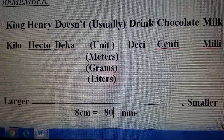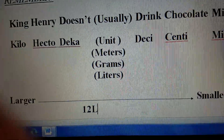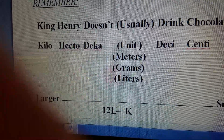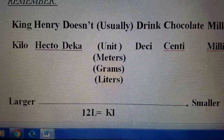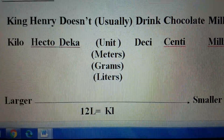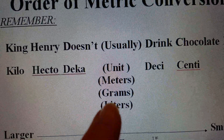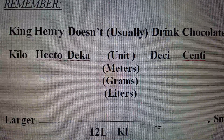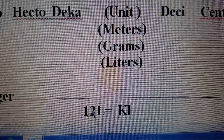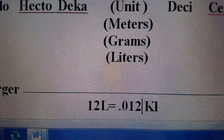Let's try another one. Let's convert 12 liters — how about kiloliters instead. Liters is under 'usually,' or under the unit position. Kiloliters is to the left under 'King.' I would have to move from the center — liters — one, two, three spaces to the left. In other words, I would need to move my imaginary decimal, which is to the right of 12, three spaces to the left. So my answer would be 0.012 kiloliters.